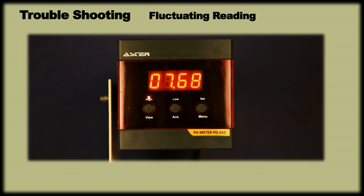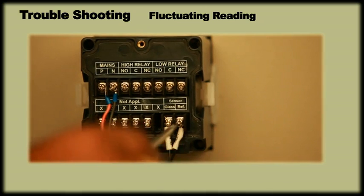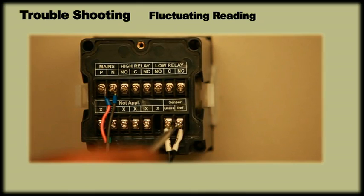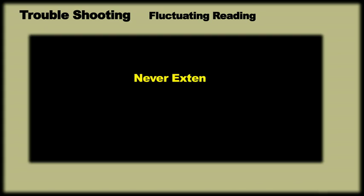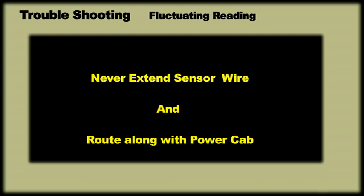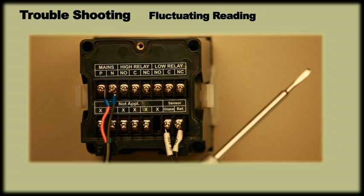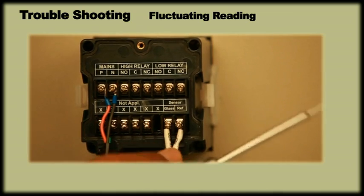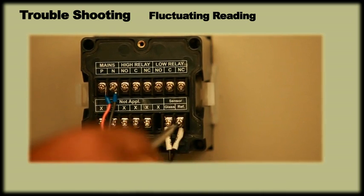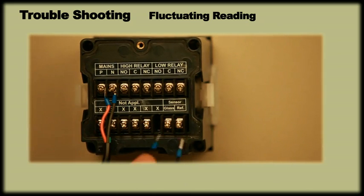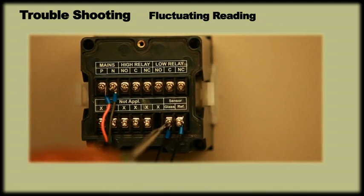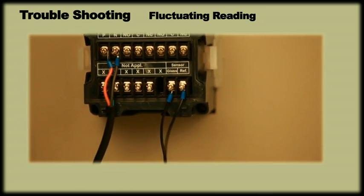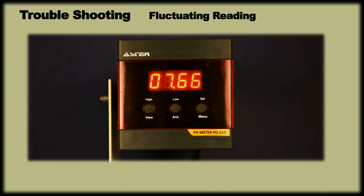If meter reading is fluctuating, ensure that the sensor cable is directly terminated on indicator terminal without any extension joints in the cable. See if there is any loose wiring. If sensor wire is routed along with power cable, then isolate the sensor wire. It could also be because the sensor is not able to send signal to the meter. In that case, disconnect the sensor from the meter by removing the wires and short sensor input terminals. Check the reading. If the reading is around 7, then contact the nearest service center.